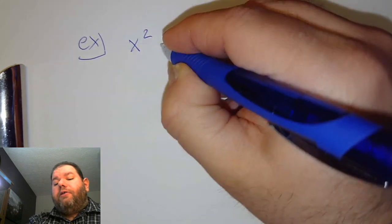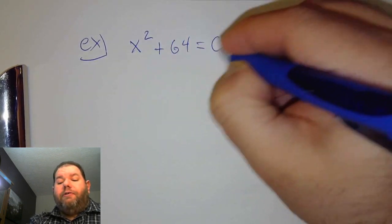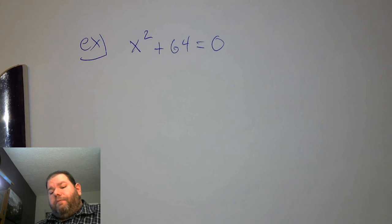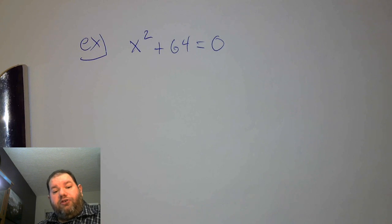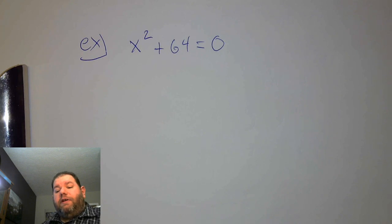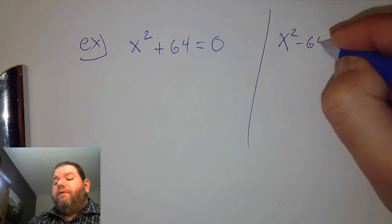Let me work an example. If we have x squared plus 64 equals 0, we want to be able to solve that. When we look at it we might think we could potentially factor it. Now, if there's a minus sign between the terms — if we had x squared minus 64 equals 0 — that is actually a factorable expression.